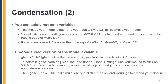You can safely choose not to omit or back-solve certain variables. This will make your model a little bit bigger, and you will need Genpack to recompile your model and obtain your executable. You will also need to edit your closure and gtap.map to observe the un-omitted variable in the results page of Run-GTAP. You will still be able to observe your results through ViewSol, Analyze GE, or ViewHarp.